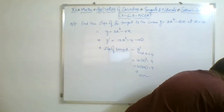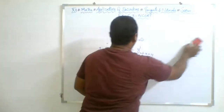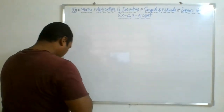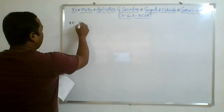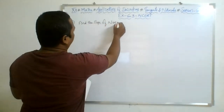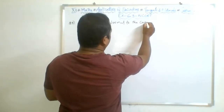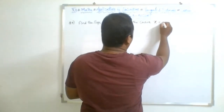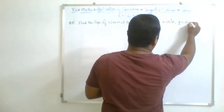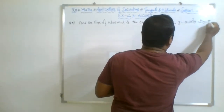Now moving to question number 5. Question number 5: find the slope of the normal to the curve x equal to a into cos cubed theta, y equal to a sin cubed theta at theta equal to pi by 4.